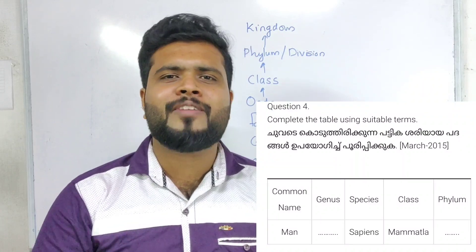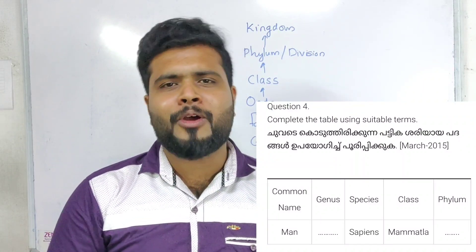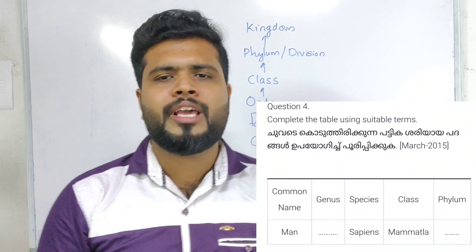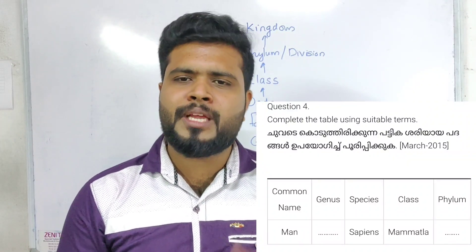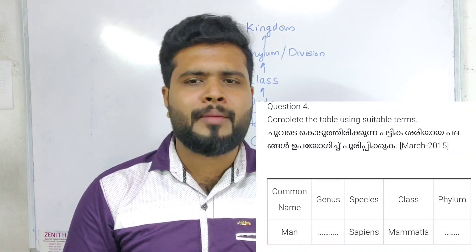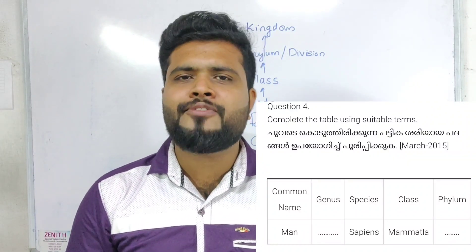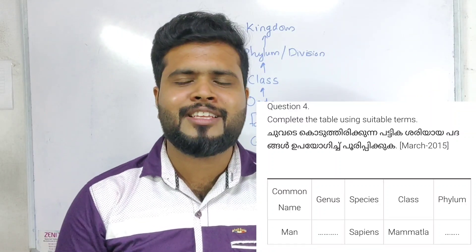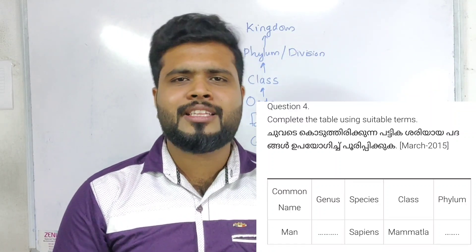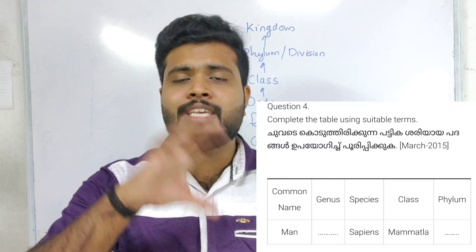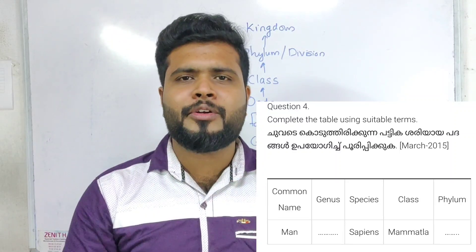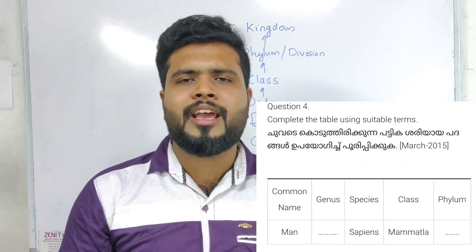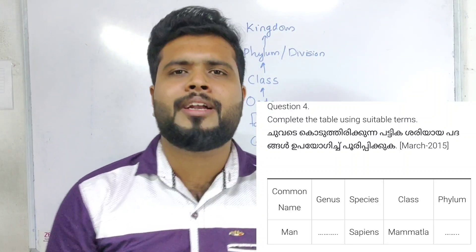So the answer is: genus is Homo, species is sapiens, class is Mammalia, and the phylum — we all have Chordata — we have the phylum. That's why we have the four data in the text.